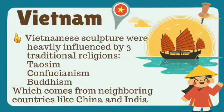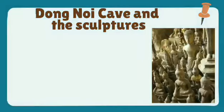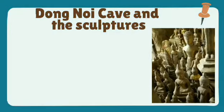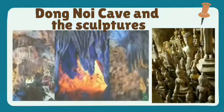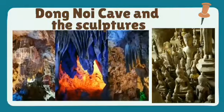Vietnamese sculptures were heavily influenced by three traditional religions — Taoism, Confucianism, and Buddhism — which came from neighboring countries like China and India. Famous sculptures in Vietnam are found in the Dong Noi Cave.